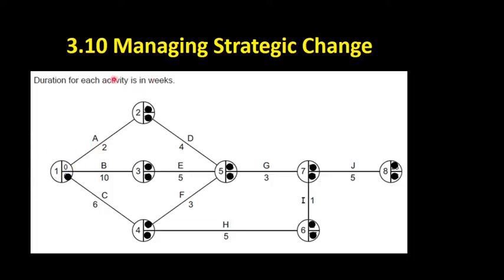We start at week zero. The duration for each activity is in weeks. At point 1, we can start activities A, B, and C. Activity A takes two weeks: 0 plus 2 equals 2. Activity B takes 10 weeks: 0 plus 10 equals 10. Activity C takes 6 weeks, so we start that in week 6.